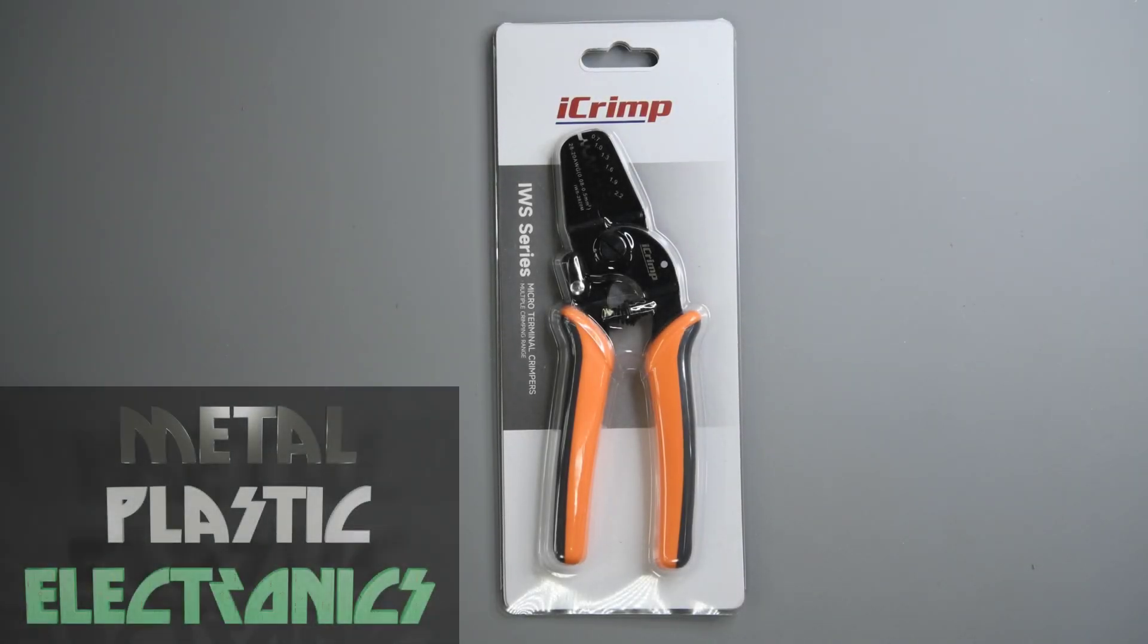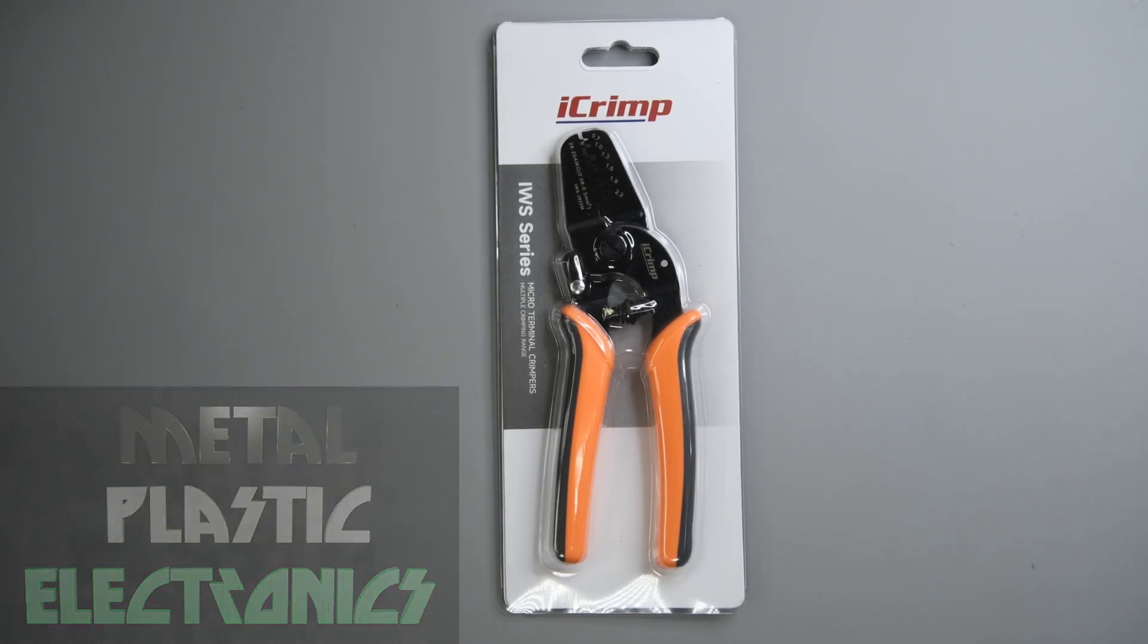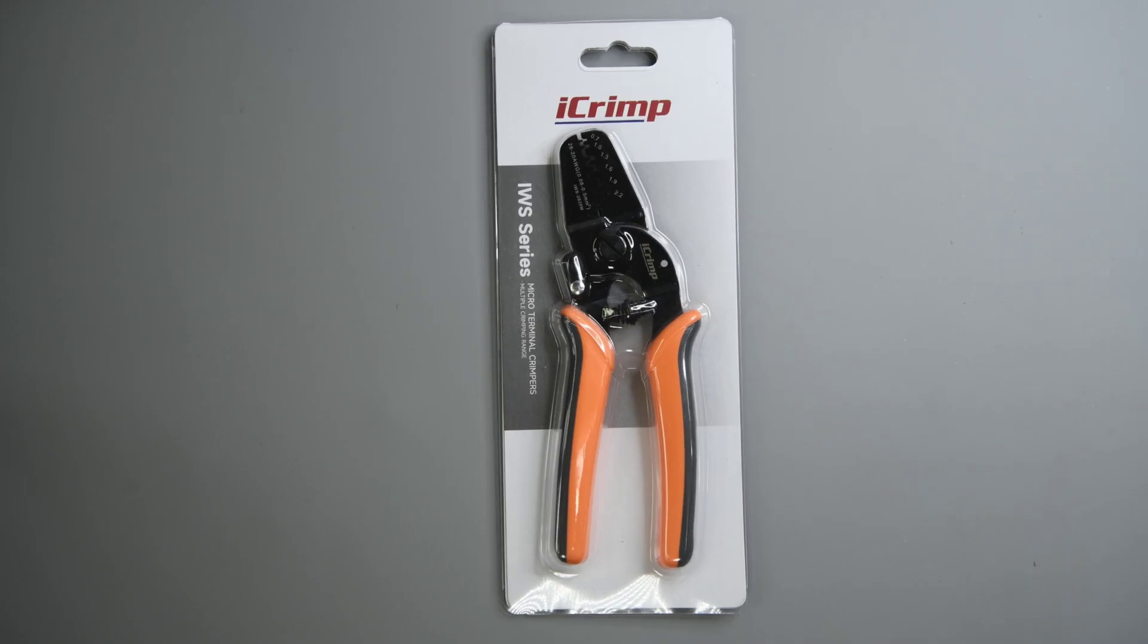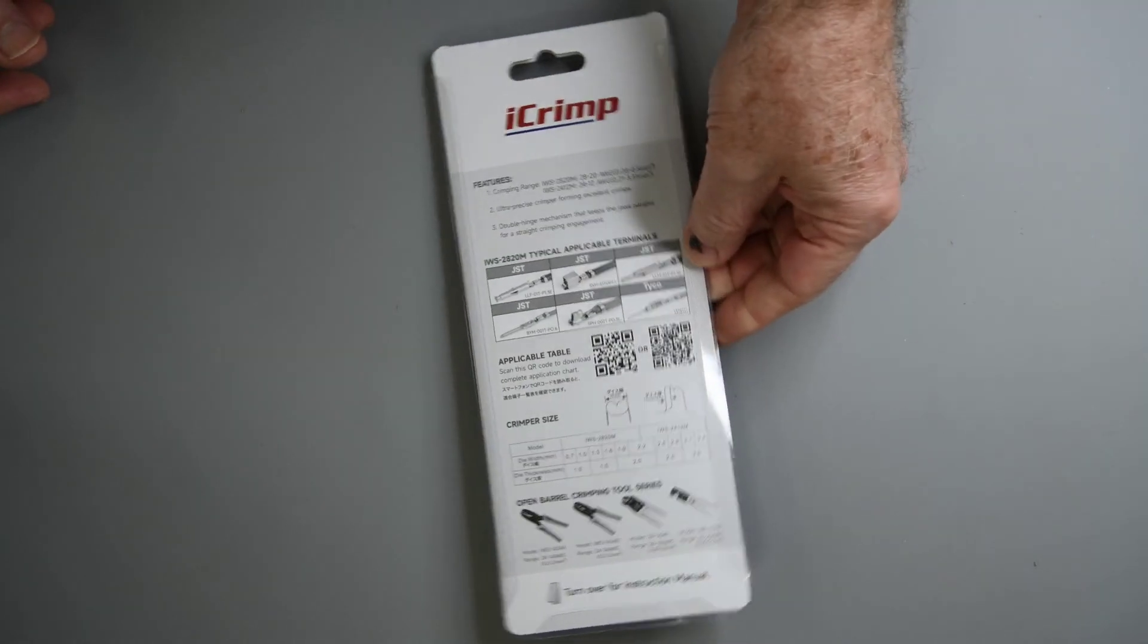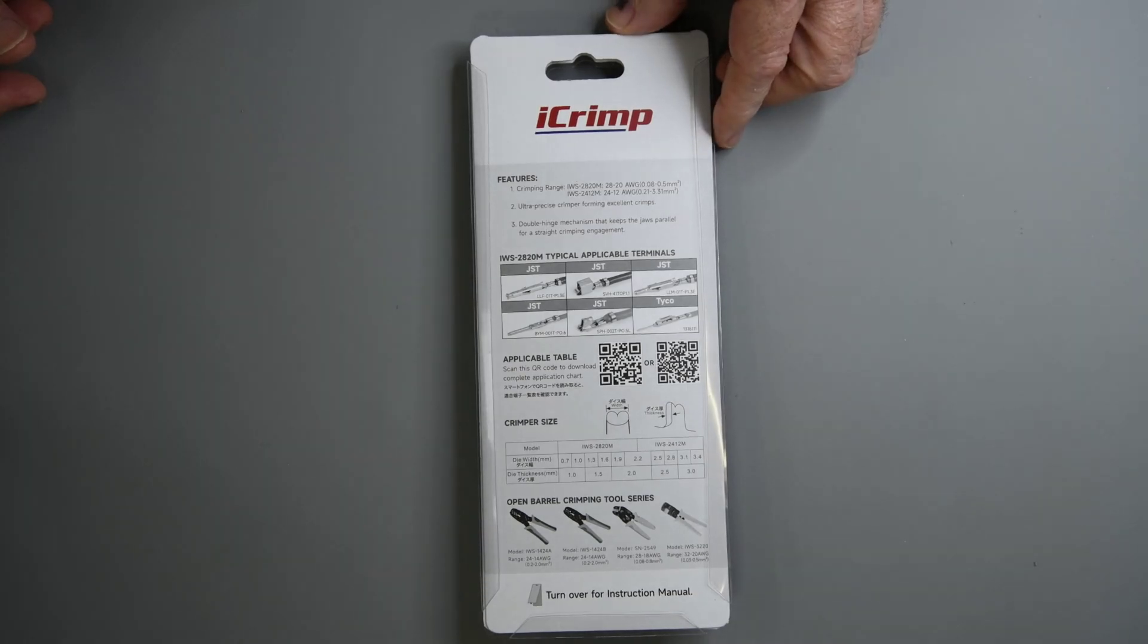I was pointed to this crimp tool, the iCrimp IWS-2820M. Die widths go from 0.7mm to 2.2mm, so I was excited to see that and it was less than $20, so I ordered one.